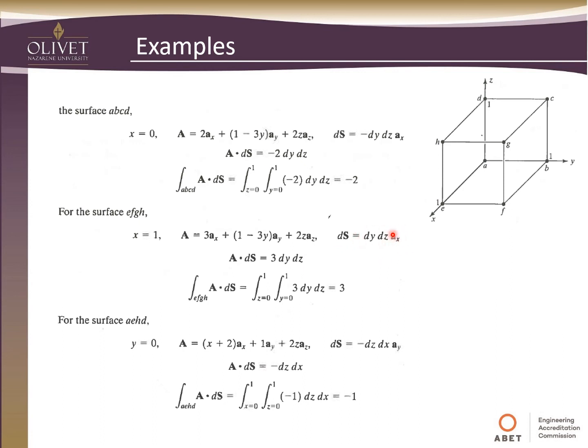Only the a_x term is going to affect us. And so in this case, x is equal to 1, right? So because of that, it changes our A vector a little bit. So we do this dot product and multiply it out. And so we get 3 dy, dz. Again, integrate this from 0 to 1. And we get 3.